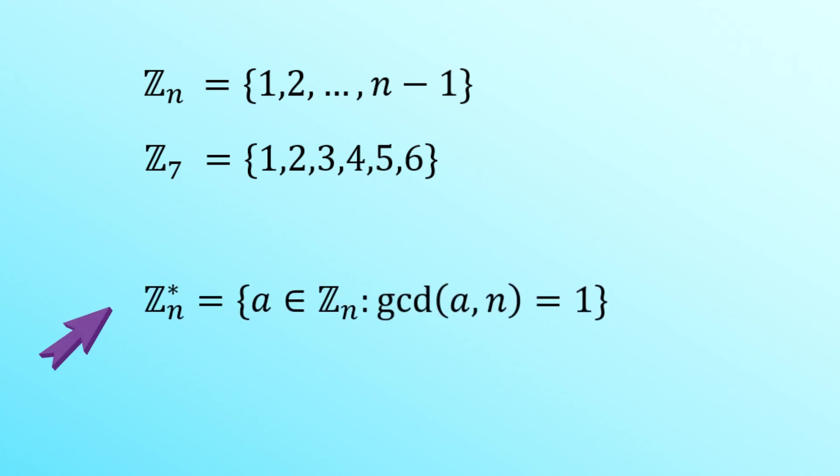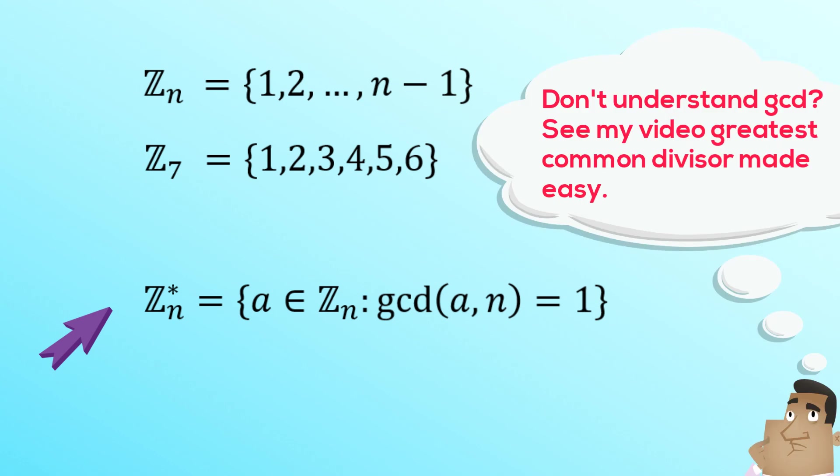Now Z star n is also a set. It's made up of all the elements. Well we start with all the elements of Zn but then we only retain the ones that have a GCD with n equal to 1.